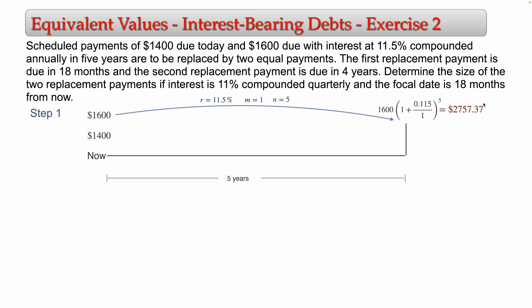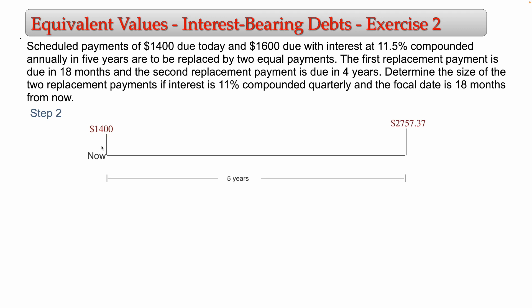This 2,757.37 is the scheduled payment — you are scheduled to pay this amount in five years. With this, we finish step number one: we have found the maturity value of the debt. So in step two, you are scheduled to pay 1,400 now and 2,757.37 in five years. That is when you start solving the problem about equivalent values.